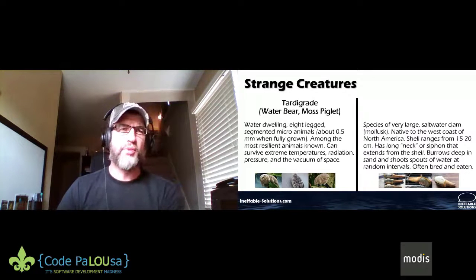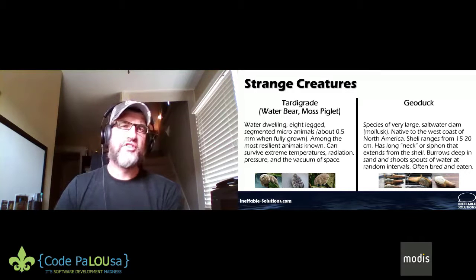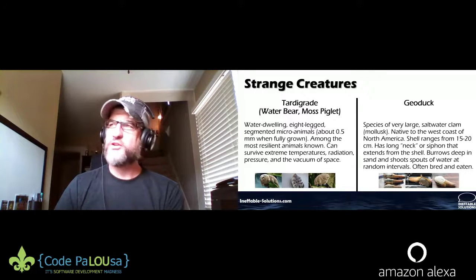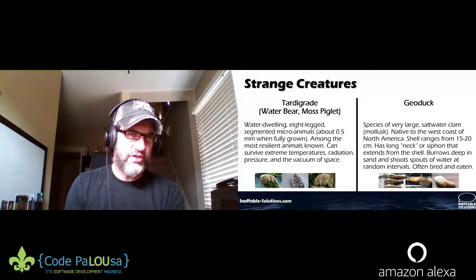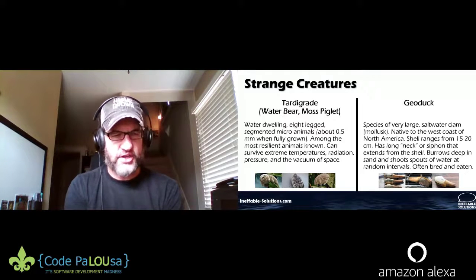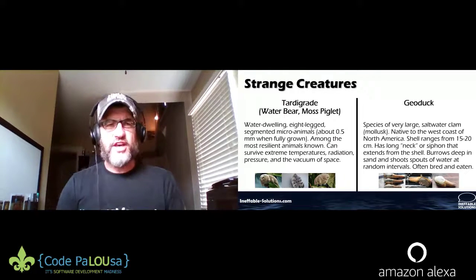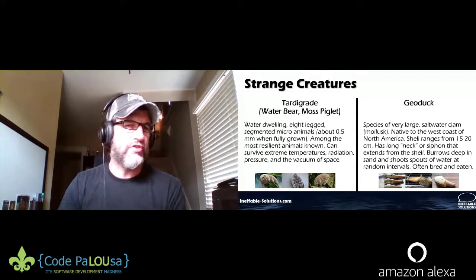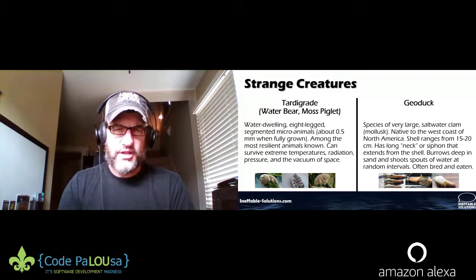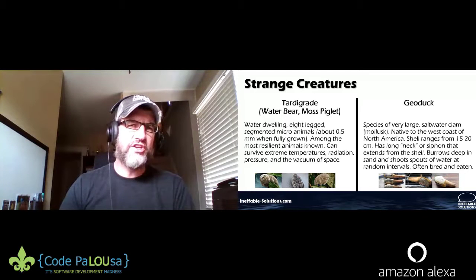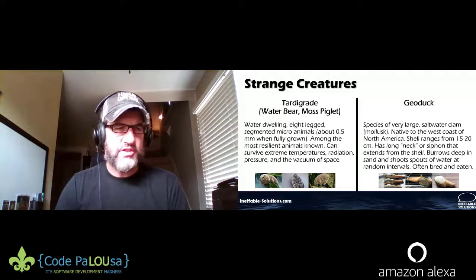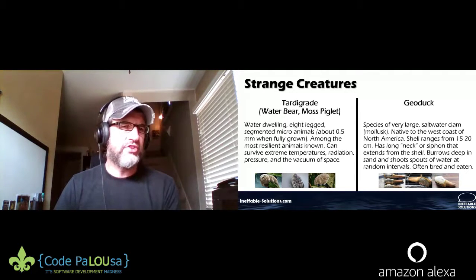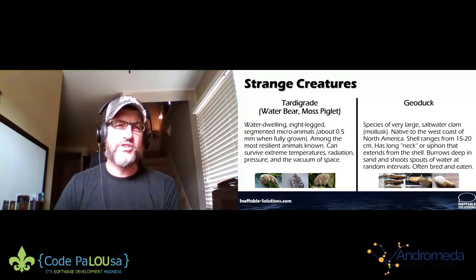The first creature — a tardigrade — is a fascinating little animal, visible to the naked eye, very small but robust, an extremophile. The second creature's name is spelled 'geoduck' but is pronounced 'gooey duck.' If you've never seen it before, you might pronounce it 'geo-duck,' which seems logical. But it comes from a Native American language — the Lushootseed language — where it was originally pronounced 'gooey duck.' Over centuries, the spelling changed but the pronunciation stayed, kind of like 'colonel' or 'February.'